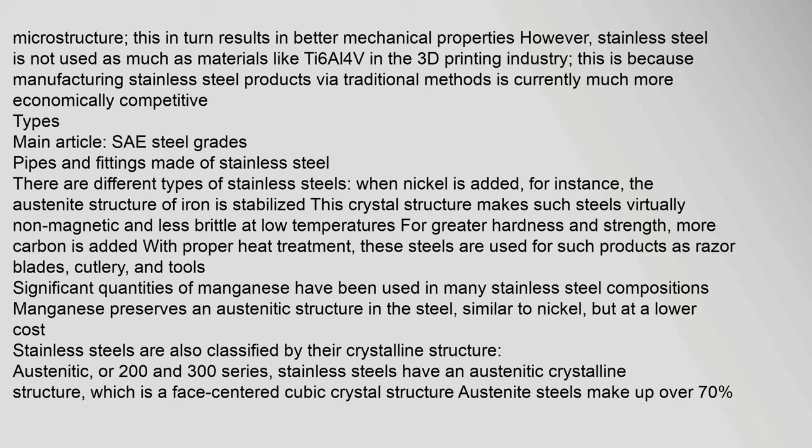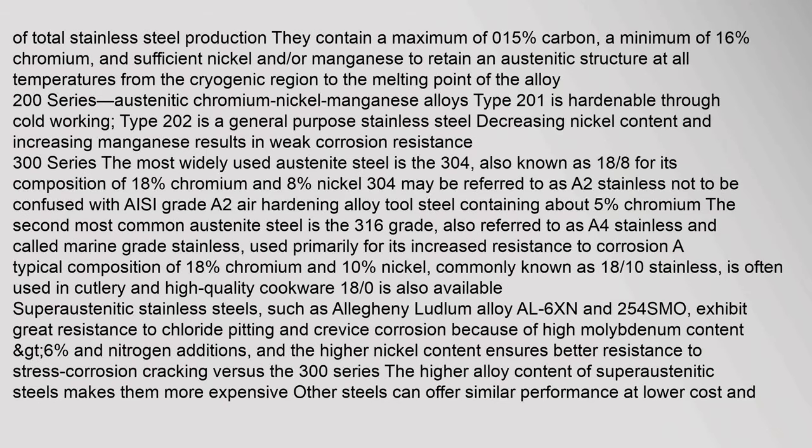Stainless steels are classified by their crystalline structure. Austenitic, or 200 and 300 series, stainless steels have a face-centered cubic crystal structure. Austenite steels make up over 70 percent of total stainless steel production. They contain a maximum of 0.15% carbon, a minimum of 16% chromium, and sufficient nickel and/or manganese to retain an austenitic structure at all temperatures from the cryogenic region to the melting point. The 200 series are austenitic chromium-nickel-manganese alloys. Type 201 is hardenable through cold working; type 202 is a general purpose stainless steel. Decreasing nickel and increasing manganese results in weak corrosion resistance. The most widely used austenite steel is the 304, also known as 18/8 for its composition of 18% chromium and 8% nickel.